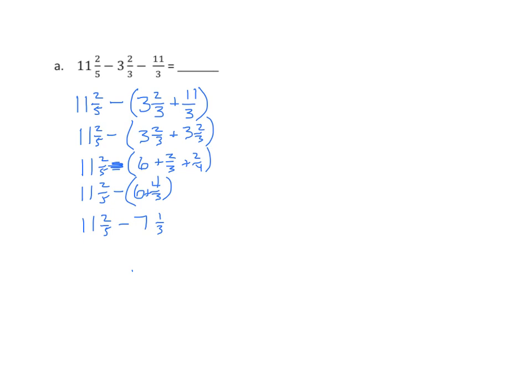Now we can use our strategies. We can change both of these to 15ths. We'll have 11 and 6 fifteenths minus 7 and 5 fifteenths. We can now subtract the wholes. 11 minus 7 is 4, and that makes 4 and 6 fifteenths minus 5 fifteenths, which equals 4 and 1 fifteenth.